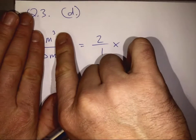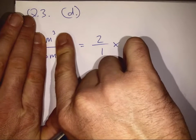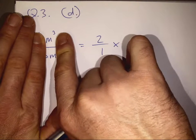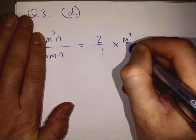And then we're going to look at the m's in isolation. 3 minus 1. We're dividing the m to the power of 3 by the m to the power of 1. So we subtract the powers. We get m squared over 1.